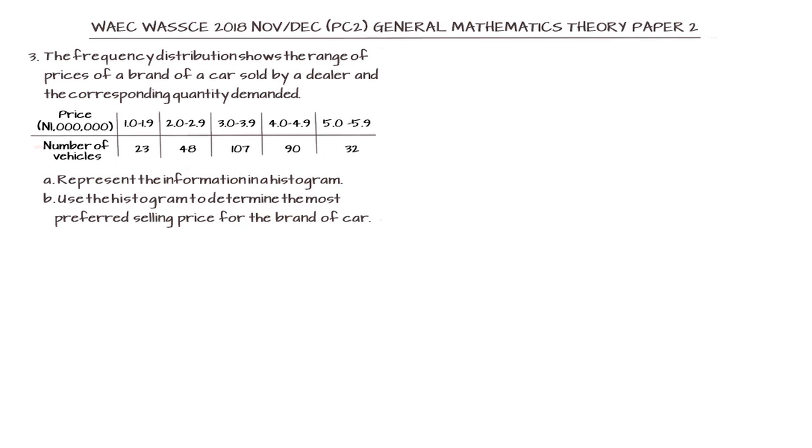From a frequency distribution, how do you generate your histogram and how do you evaluate the mode of the data that is given to you?